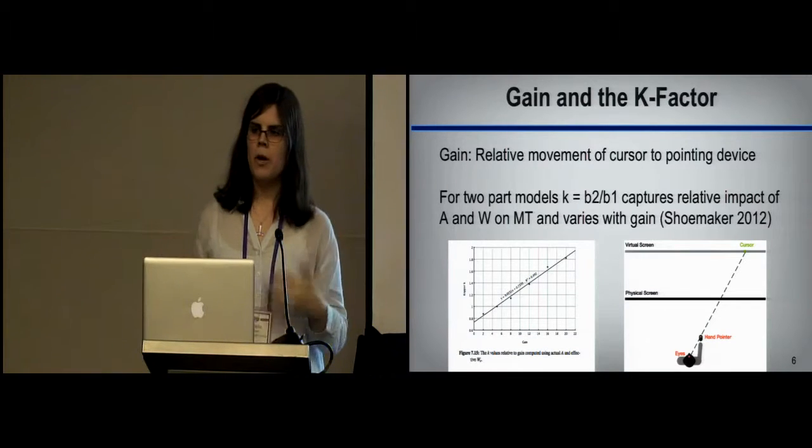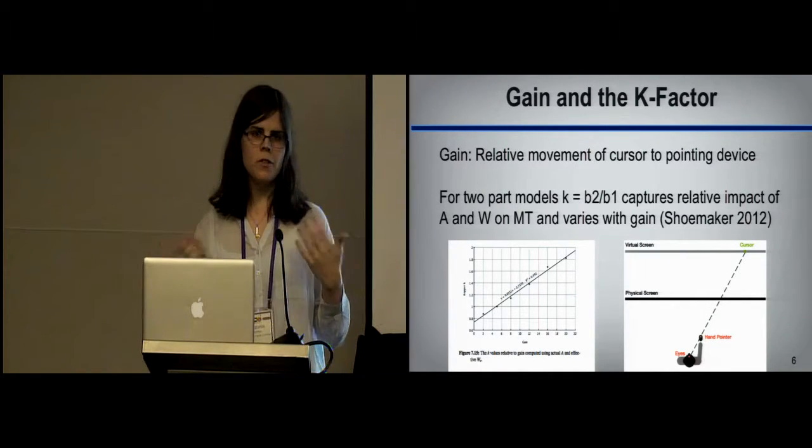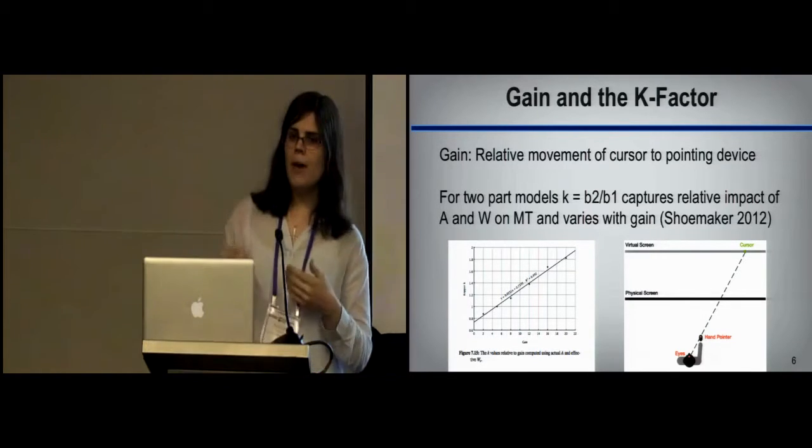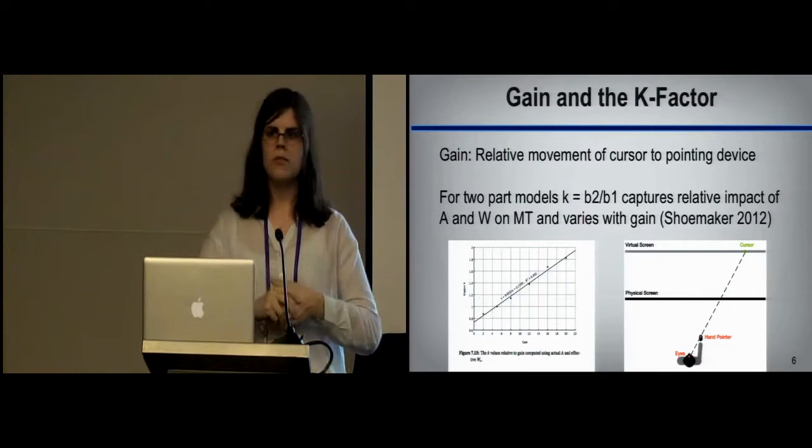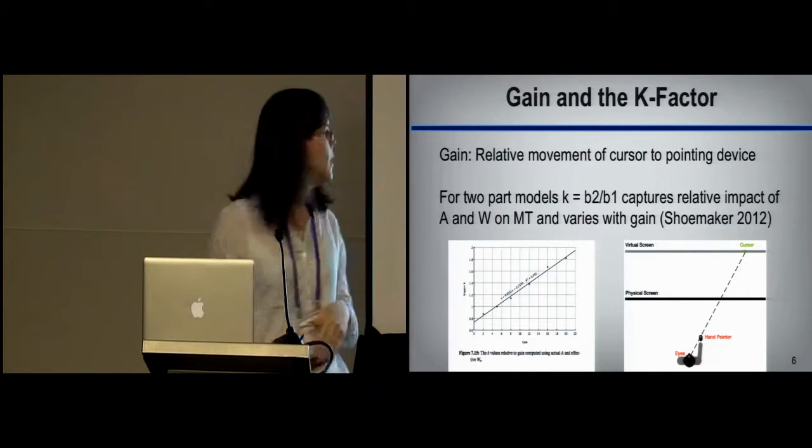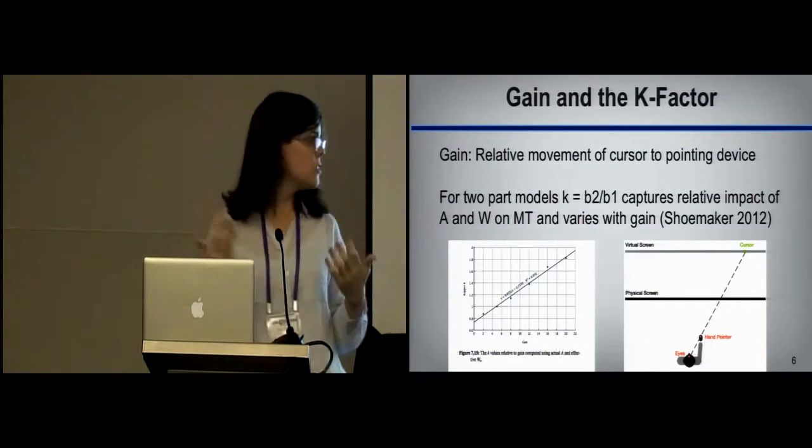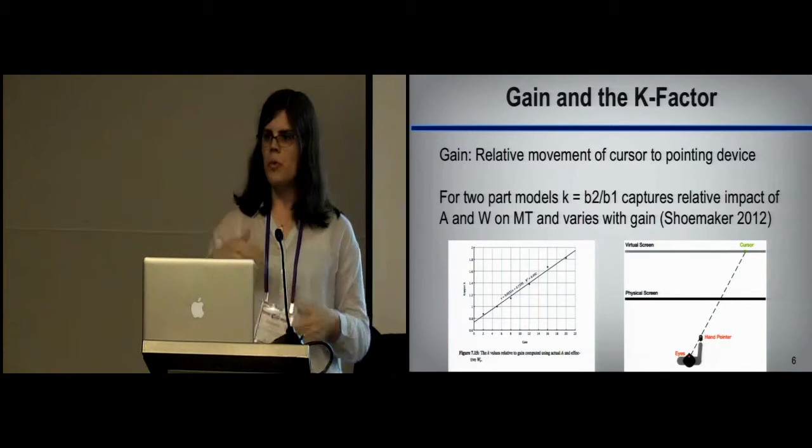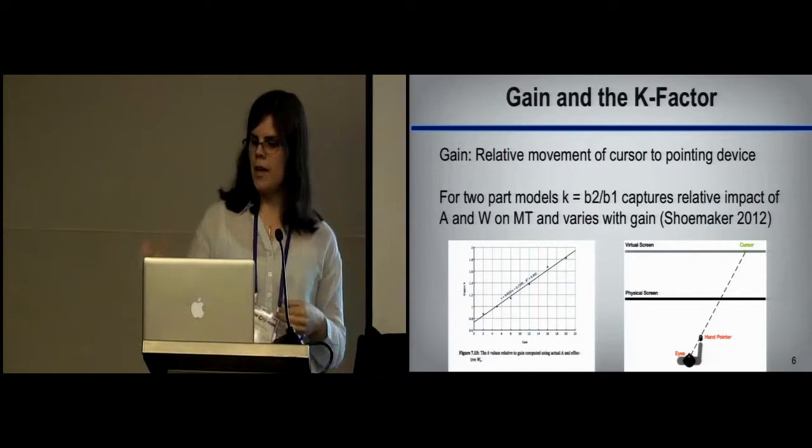So that K-factor I was talking about, Welford's model has two parameters, or two coefficients, each describing the impact of amplitude and width. K is the ratio of the two. It just describes the relative impact of these two on pointing performance. So this graph on the left is from Shoemaker's work, showing essentially that K varies very linearly with gain. You make the mouse more and more sensitive, the bigger and bigger K gets.